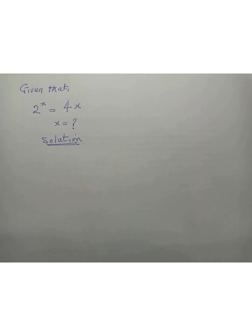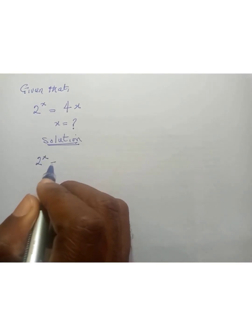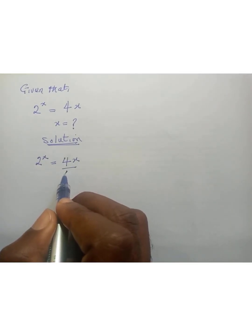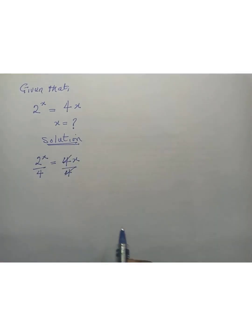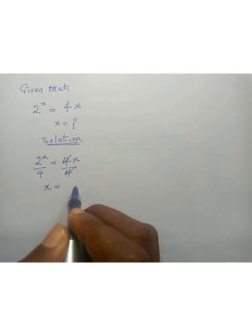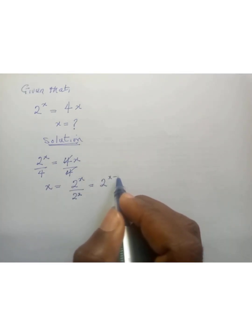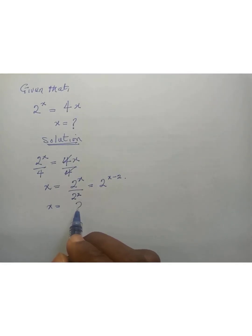So let's get started. We write the equation as 2^x = 4x. Divide both sides by 4, so we have x = 2^x / 4. But this 4 is also 2^2, so everything can be written as 2^(x-2). Therefore, x = 2^(x-2).